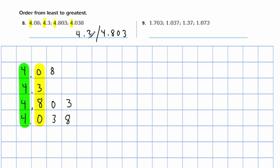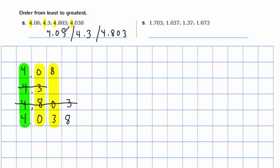Which one's the next greatest? 4.3. Now we can't tell from the tenths place which one is the very least, so we're going to go on to the next place. I'll cross out the ones I don't need to look at anymore to stay organized. In the hundredths place, eight is greater than three, so 4.08 is the next greatest. And 4.038 is the least out of all of those. Every time I found one that was greater, I just put it into the greatest place, so I kind of wrote these backwards.